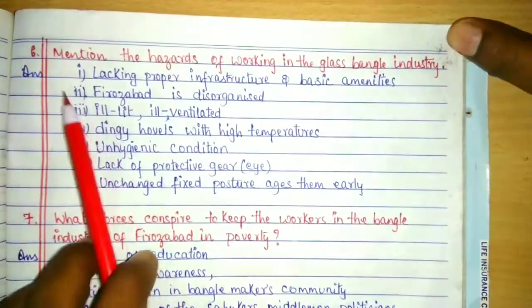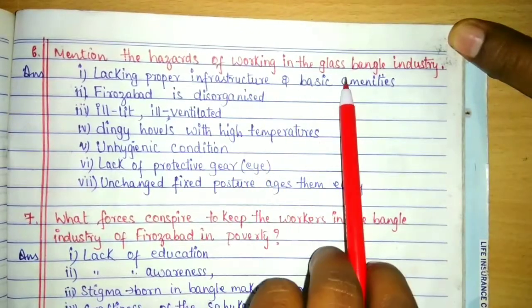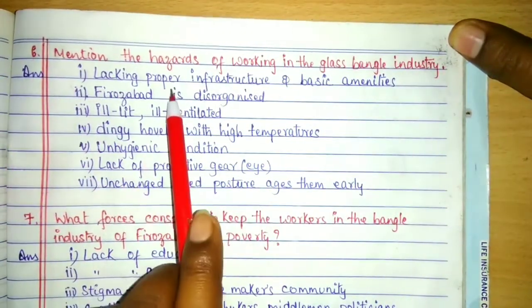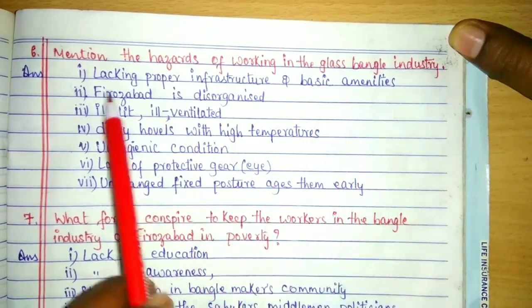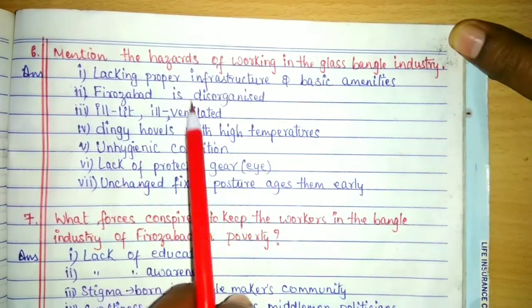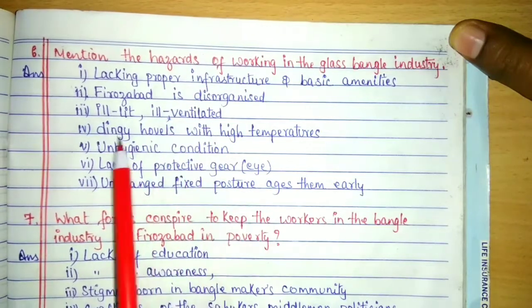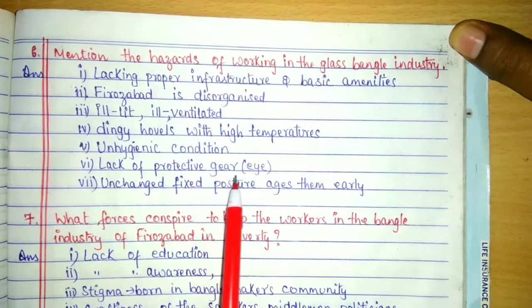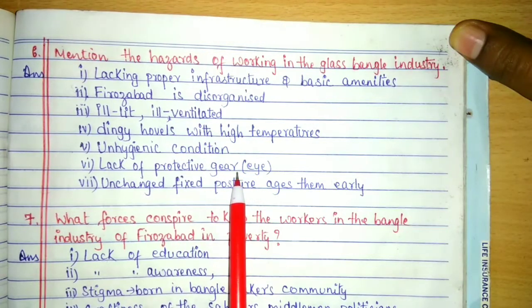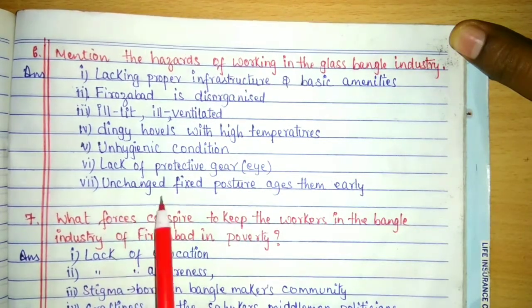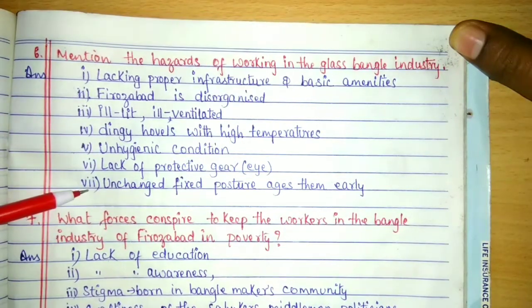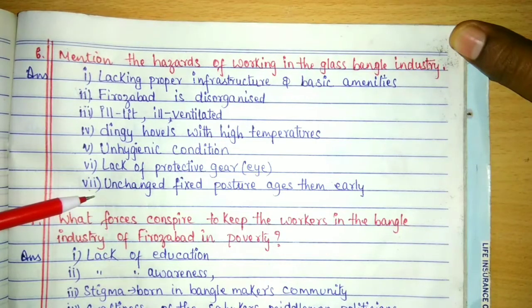Mention the hazards of working in the bangle industry. First, lacking poor infrastructure and basic amenities. Ferozabad is disorganized, ill-lit, ill-ventilated, with dingy hovels, high temperatures, unhygienic conditions, and lack of protective gear for the eyes. Workers must maintain an unchanged fixed posture which ages them early. The explanation has already been done in the Lost Spring line-wise video.